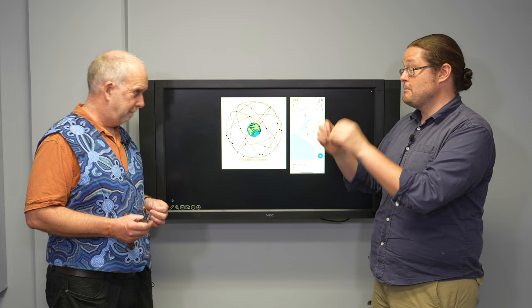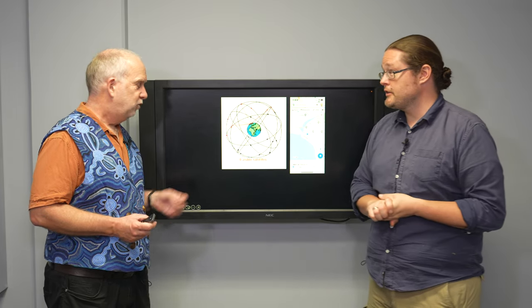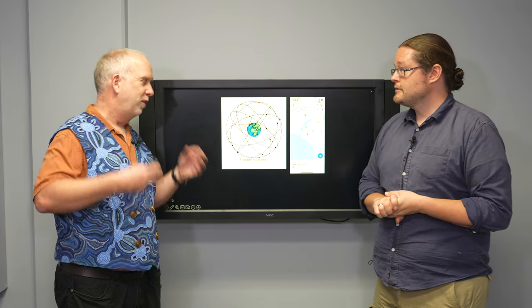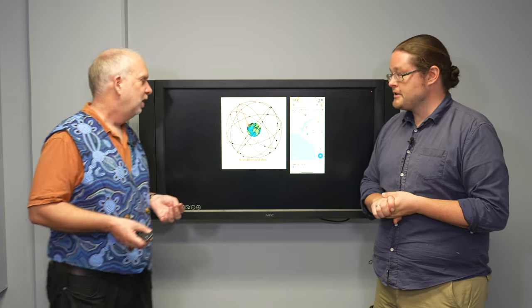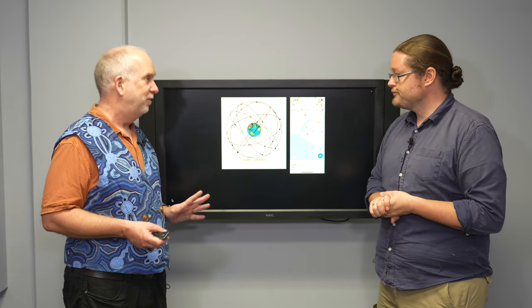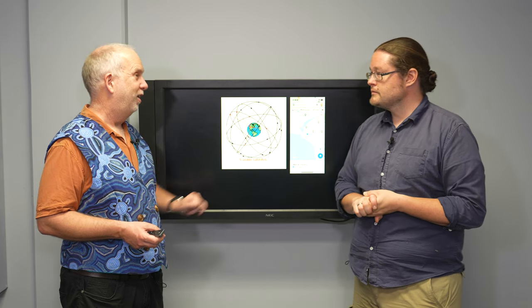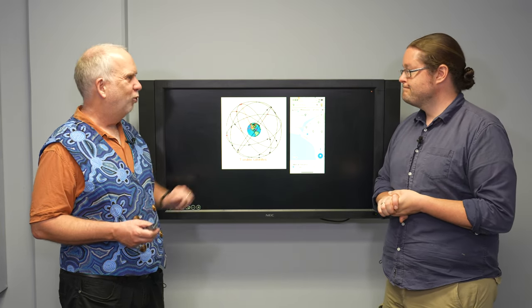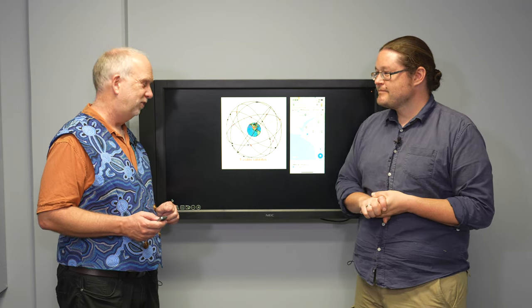GPS is actually one type of network. There's actually multiple of these in different countries - the Chinese one, the European one, and the Russian one. They all work on the same principle. They've all got a fair number of satellites, not as many as Starlink. I think it's about 24 for GPS and similar for the other systems.